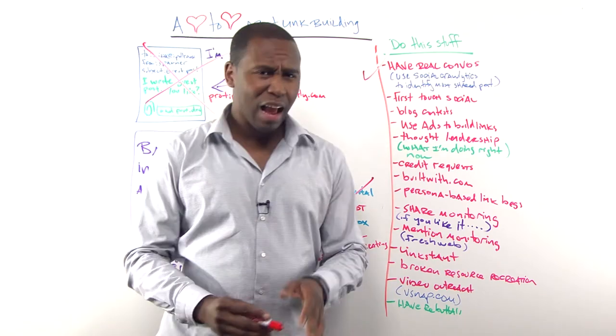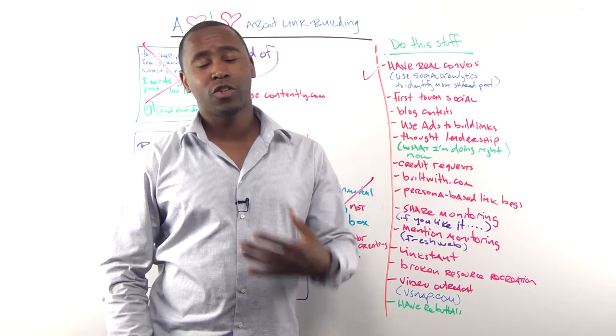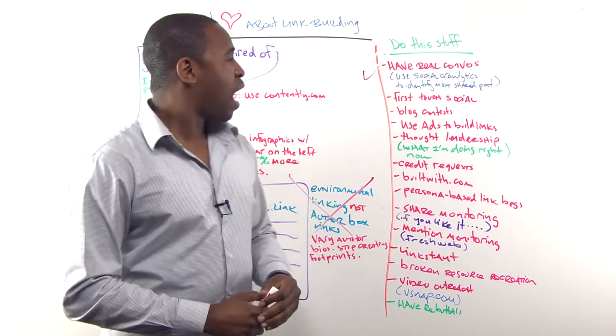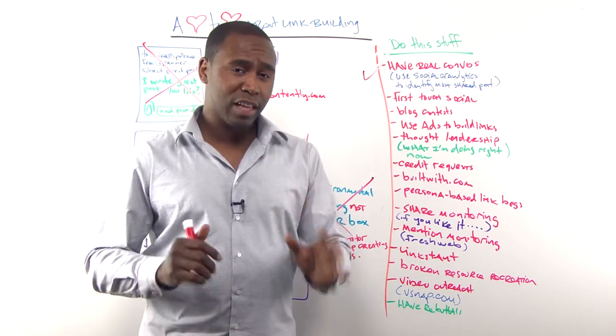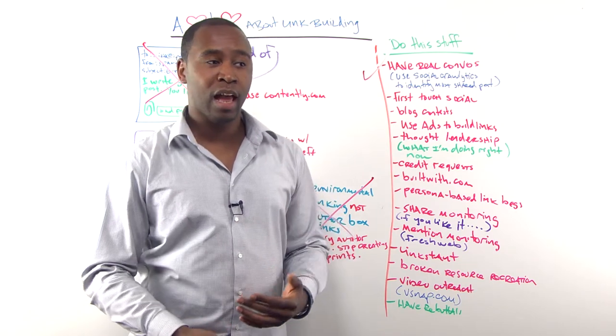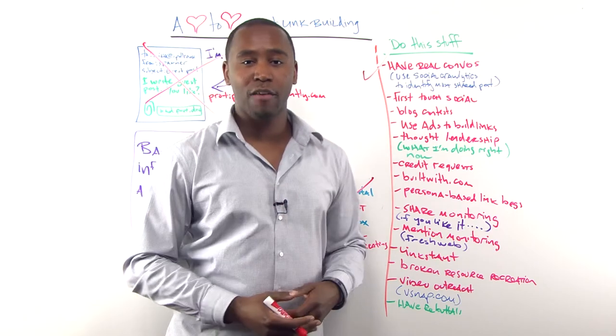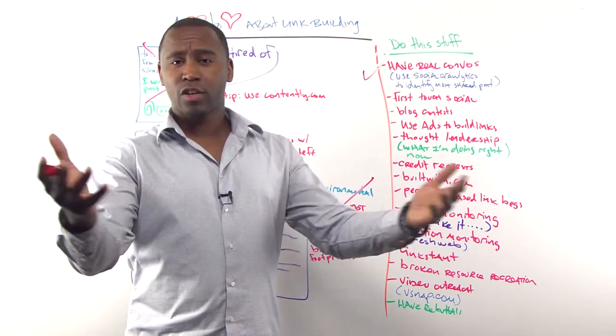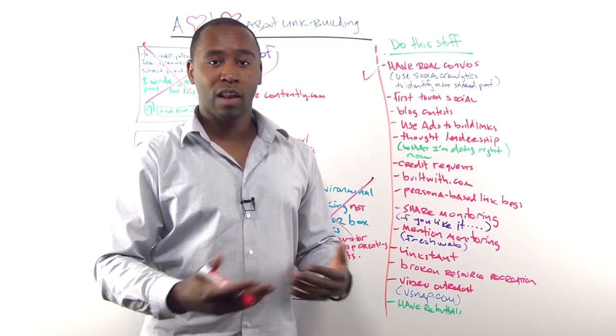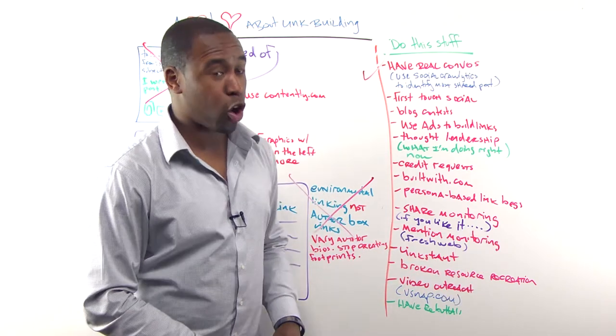And then, I did a Whiteboard Friday. It was actually my first one about a year and a half ago. And I talked to you about how to build links using social media. You should probably check that one out again. But what we've continued to notice is that having a first touch in social media is way more effective than just sending out emails. So just jump into a conversation with a prospect. SEO Moz's follower wonk is great for that. You just type in the keywords of the people that are relevant and then you can just hop into a conversation with them. Do that. It works.